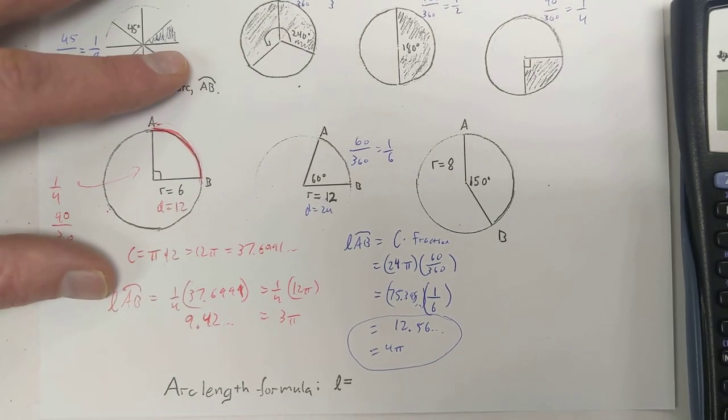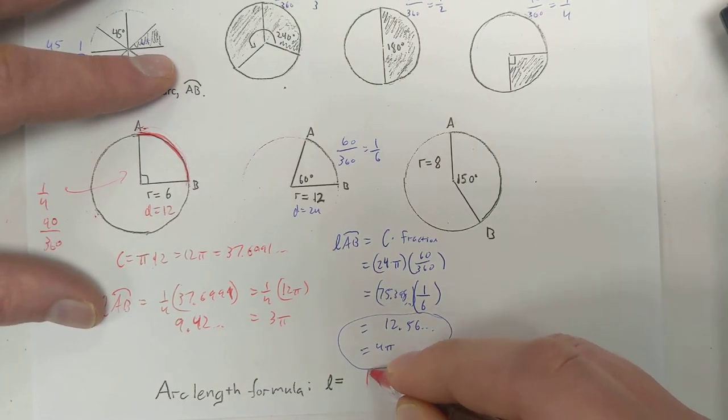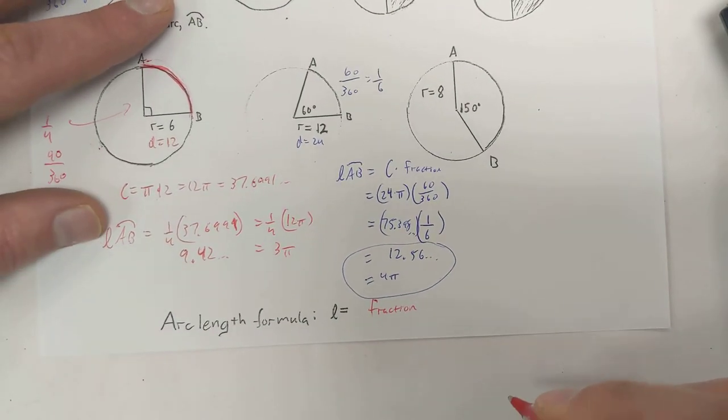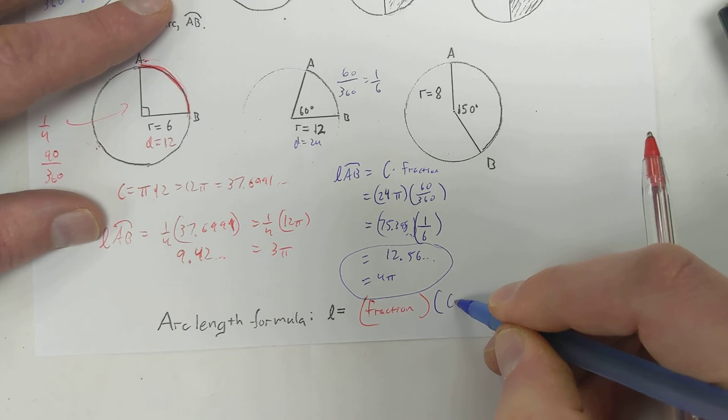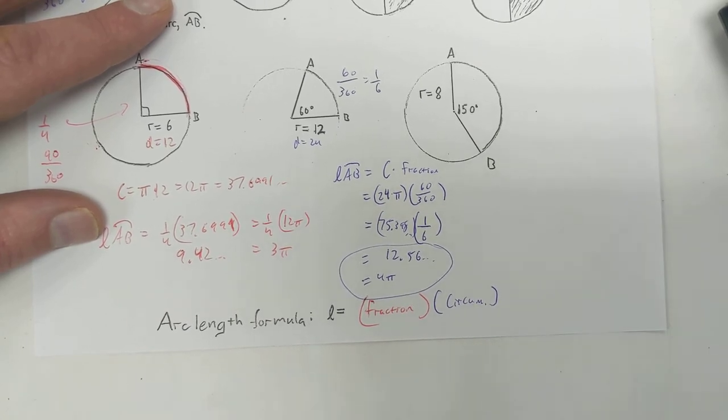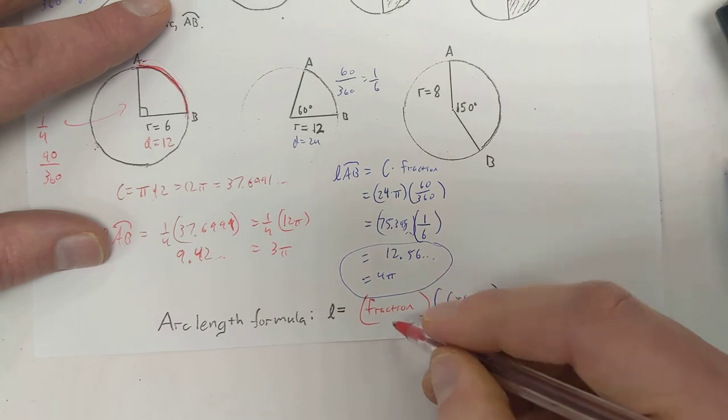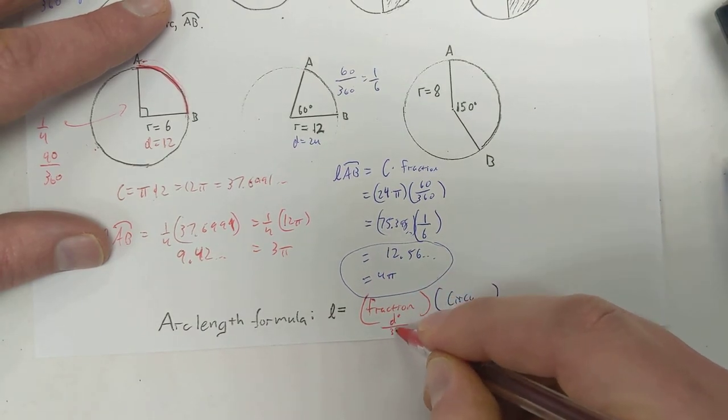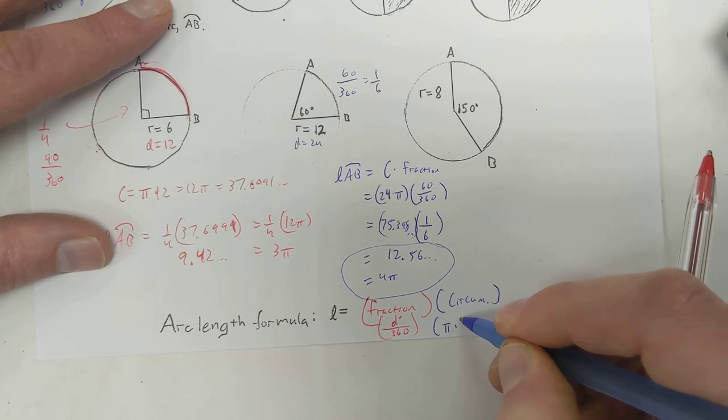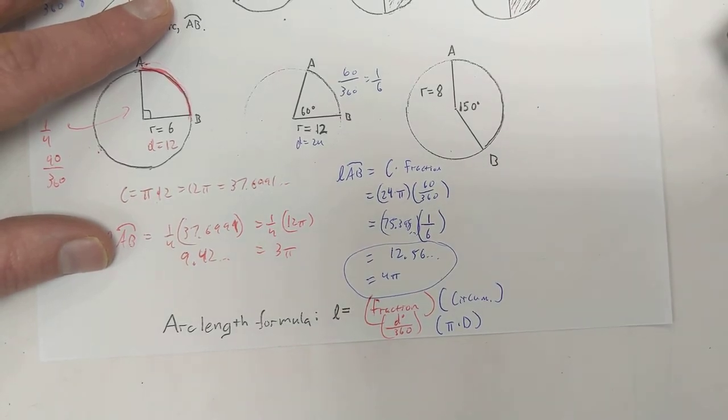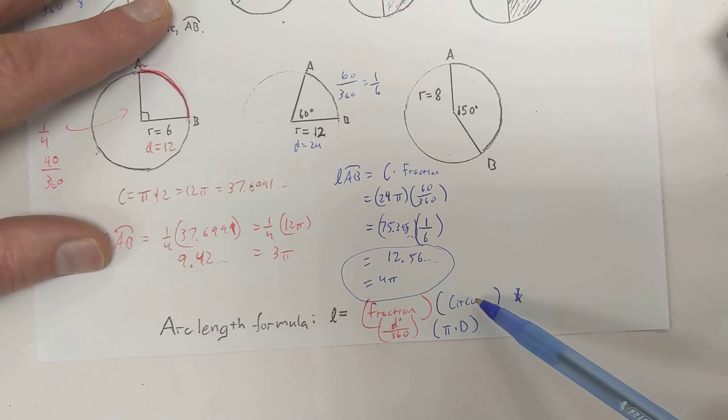So what we have going on here is, just like in my other video, the arc length formula is the fraction of the circle that we need, the fraction, times the circumference. That's the arc length formula. Fraction of the circle times the circumference. Now, how do you get that fraction? You can do degrees out of 360. And then the circumference, you can use pi d, pi times diameter, or you can use 2 pi r. There's lots of different ways you can simplify this. But the big one here, I want you to memorize this, where it comes from. The fraction times the circumference. That's how we find the length of an arc.